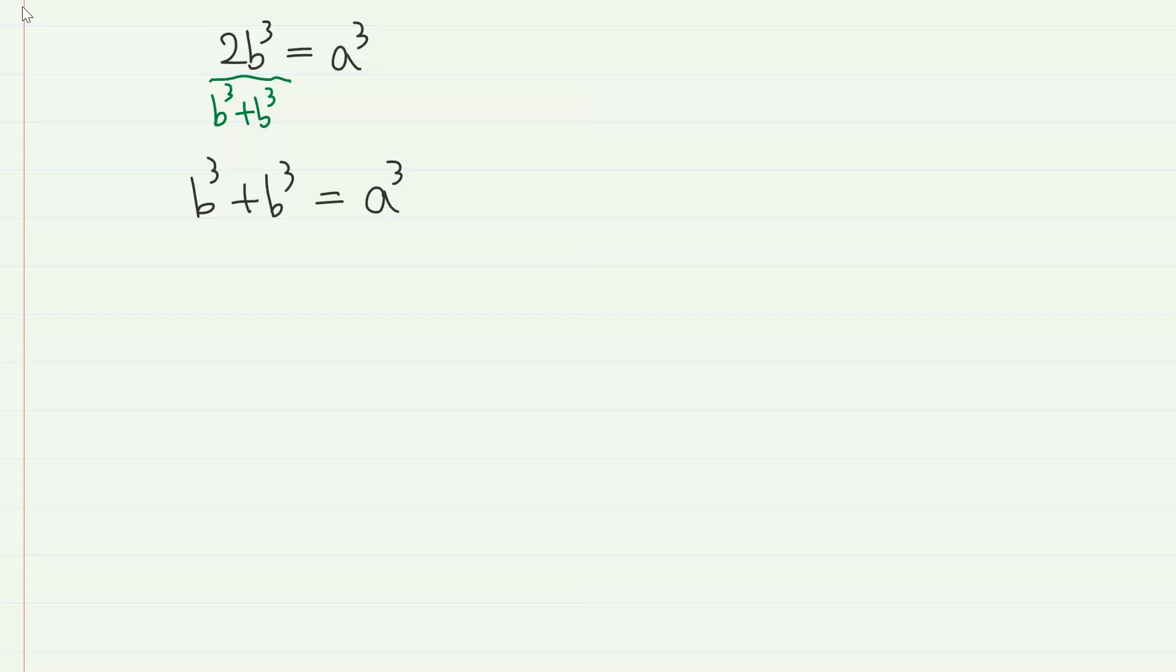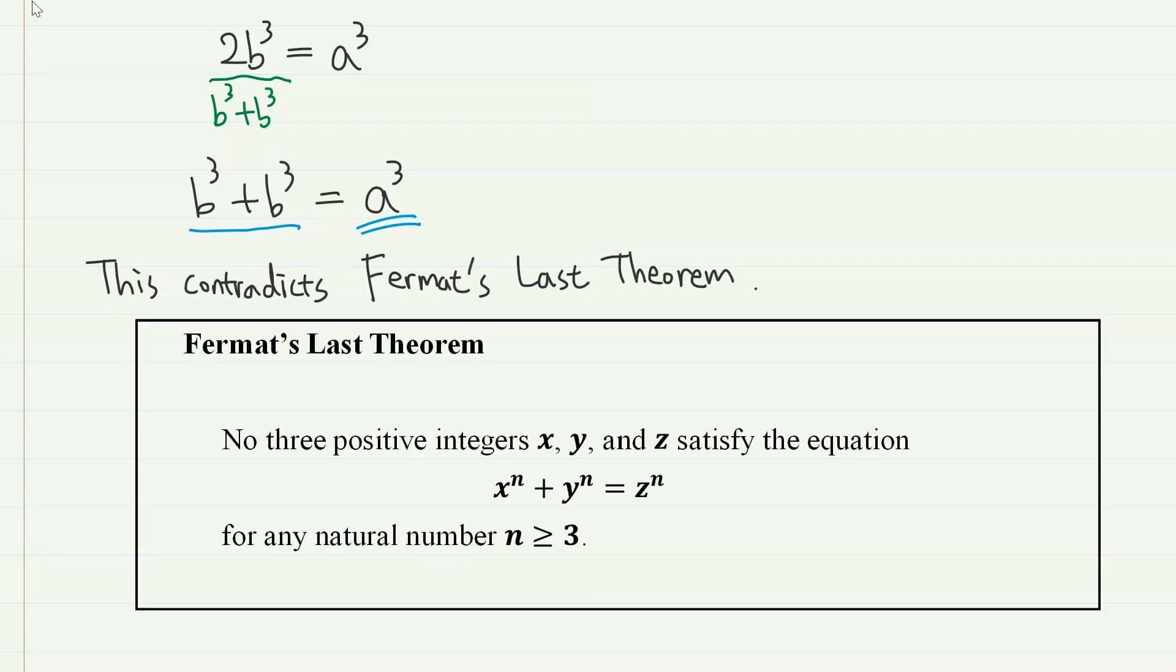This means that the sum of cubes of 2 natural numbers is equal to the cube of a natural number, which contradicts Fermat's last theorem that no 3 positive integers x, y, and z satisfy the equation x to the power of n plus y to the power of n equals z to the power of n for any natural number n greater than or equal to 3.